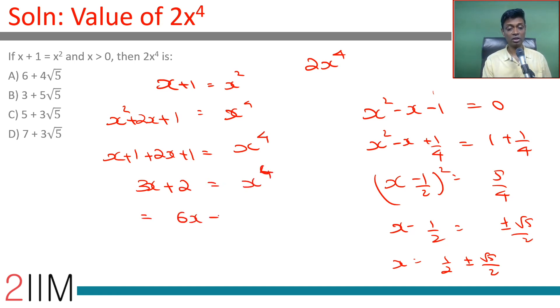Therefore 6x + 4 = 2x⁴. We want to find this, so we only need to find 6x + 4.